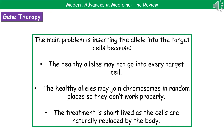The big problem with gene therapy is actually inserting the allele into the target cells. The healthy alleles may not reach every target cell needed, and they may join chromosomes at a random location and therefore not work properly, since alleles must be in a specific location on the chromosomes. A further major problem is that the treatment is short-lived: as long as those cells are alive they will carry the healthy allele, but since cells are constantly replaced in the body, once those cells are replaced the healthy allele is lost and the faulty ones return.